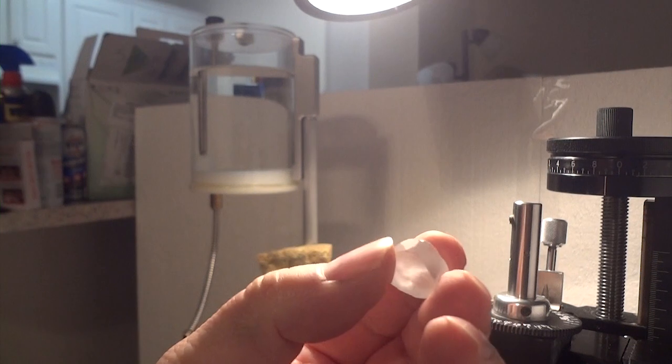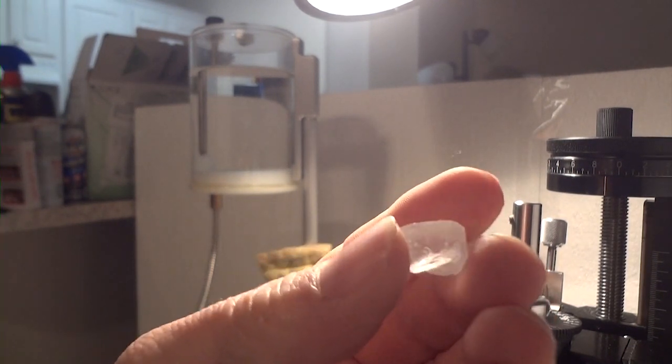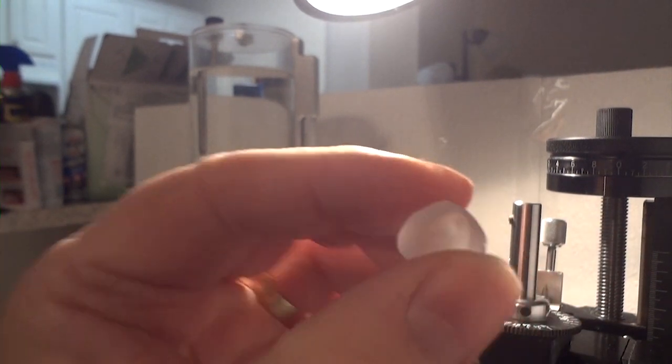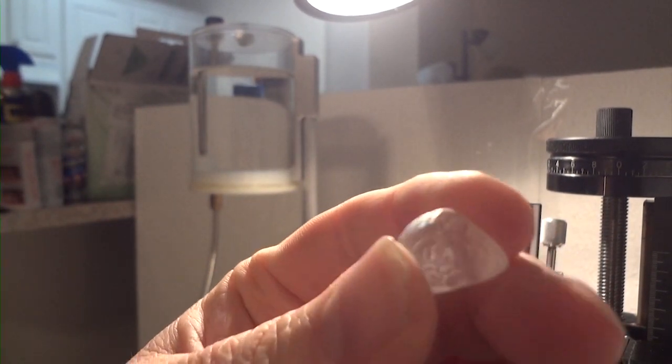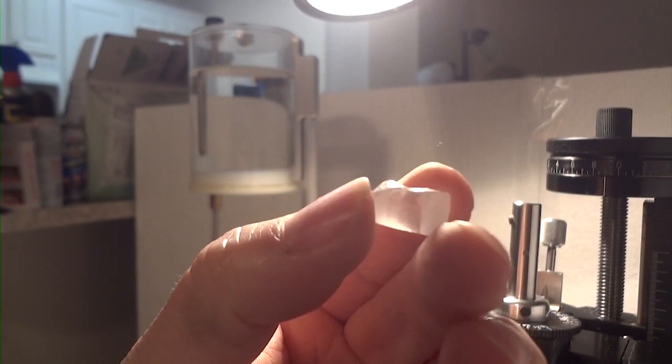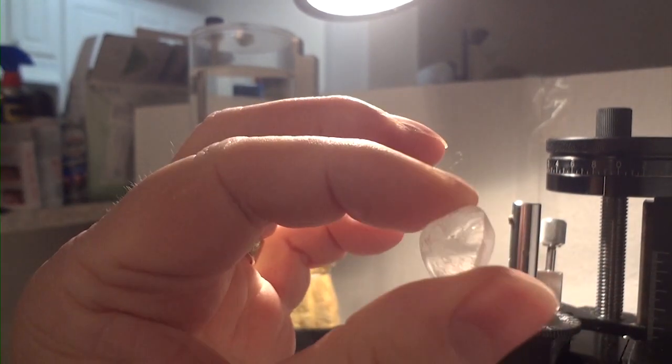This is a piece of clear topaz rough. I've used my 240 grit lap to shape this stone into a roundish shape, basically preforming it. And I also ground the top of the stone flat, which makes it easier to glue the stone to the dop.